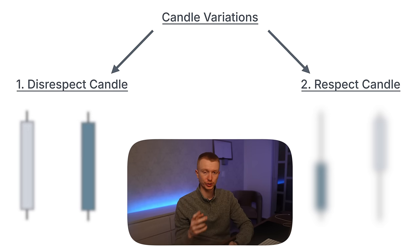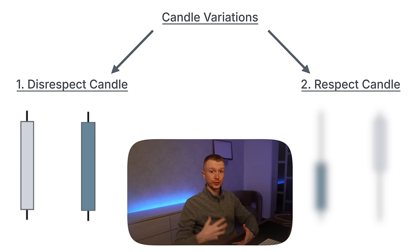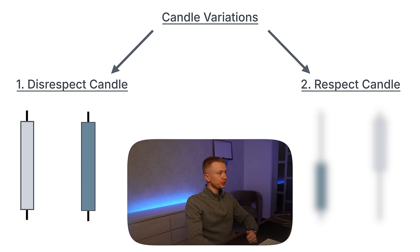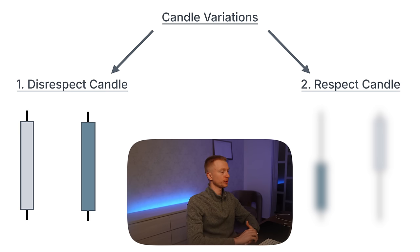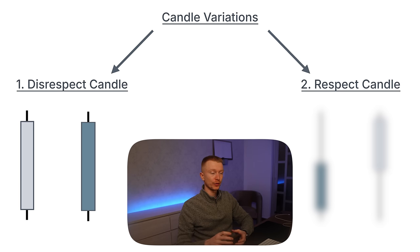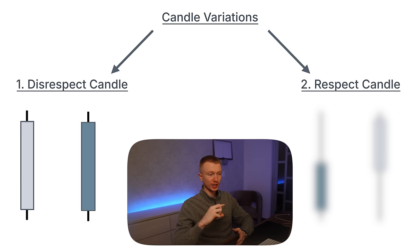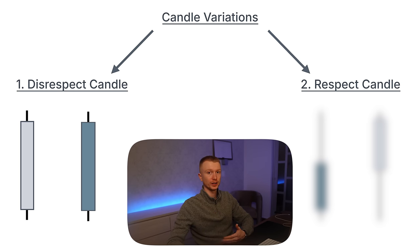When we have a singular candle, there are two variations we are dealing with. The first variation is a disrespect candle, as I like to call it. This is a bullish disrespect candle and this is a bearish disrespect candle — the exact same, just inversed. The characteristics of a disrespect candle is when we have a big body, at least relatively seen to the wicks, so the wicks are significantly smaller on both sides of that candle relative to the overall body.